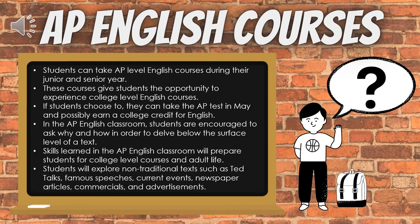During junior and senior year, students have the opportunity to take an AP-level English course. These courses are designed to give students the chance to experience a college-level English course while in high school. If students choose, in May they can take an AP test for their selected course and possibly earn a college credit for English. In the AP English classroom, students are focused on more than what and when — they are encouraged to ask why and how in order to delve below the surface level of a text. These skills will help create students who are better prepared for college and adult life.